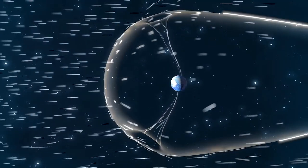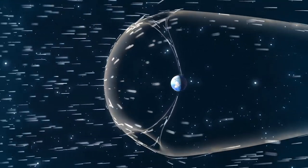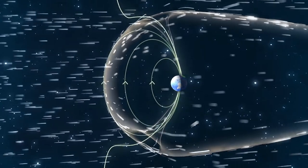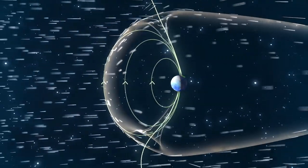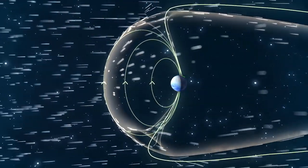Our planet is surrounded by a magnetic field that helps us hold on to our atmosphere. But at the north and south poles, the magnetic field bends inwards, creating a corridor between Earth and space.